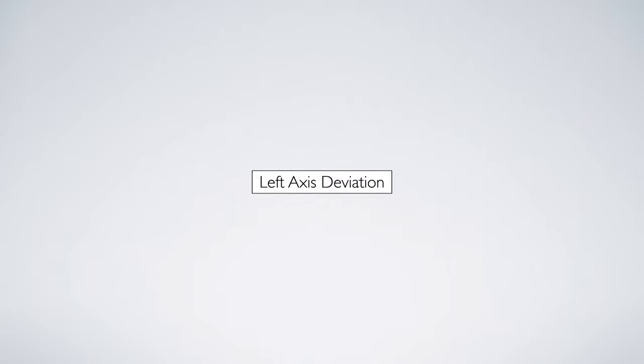Now let's shift our focus to left axis deviation. This occurs when the vector of electrical activity moves towards the left side of the heart and falls between minus 30 to minus 90 degrees.